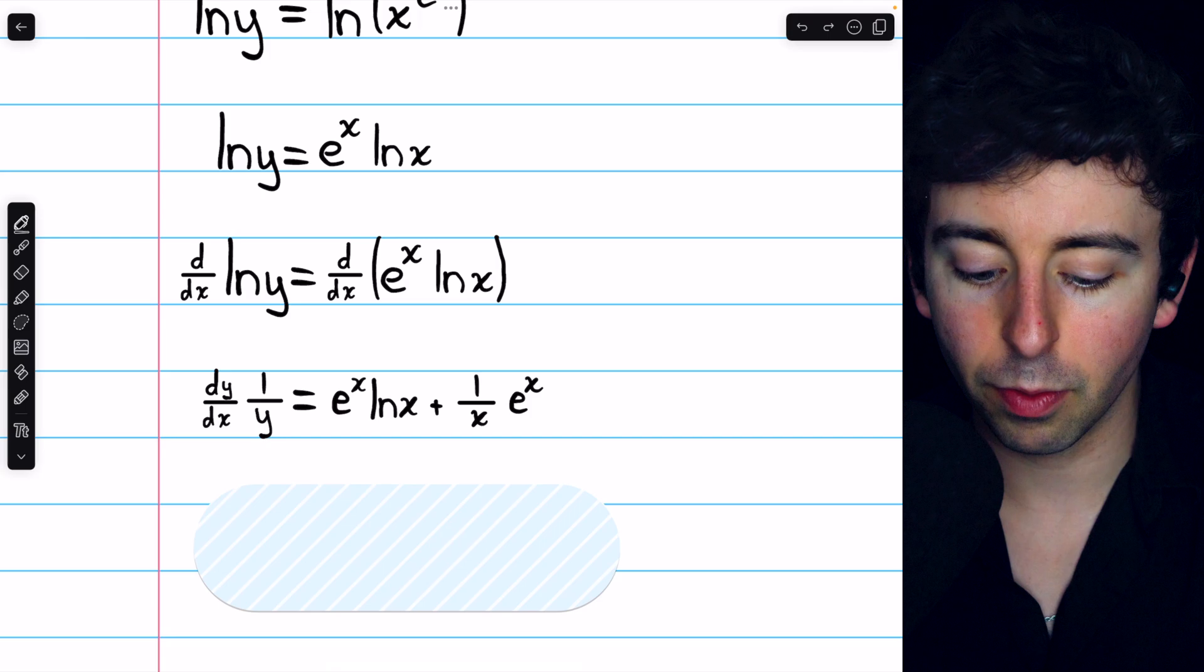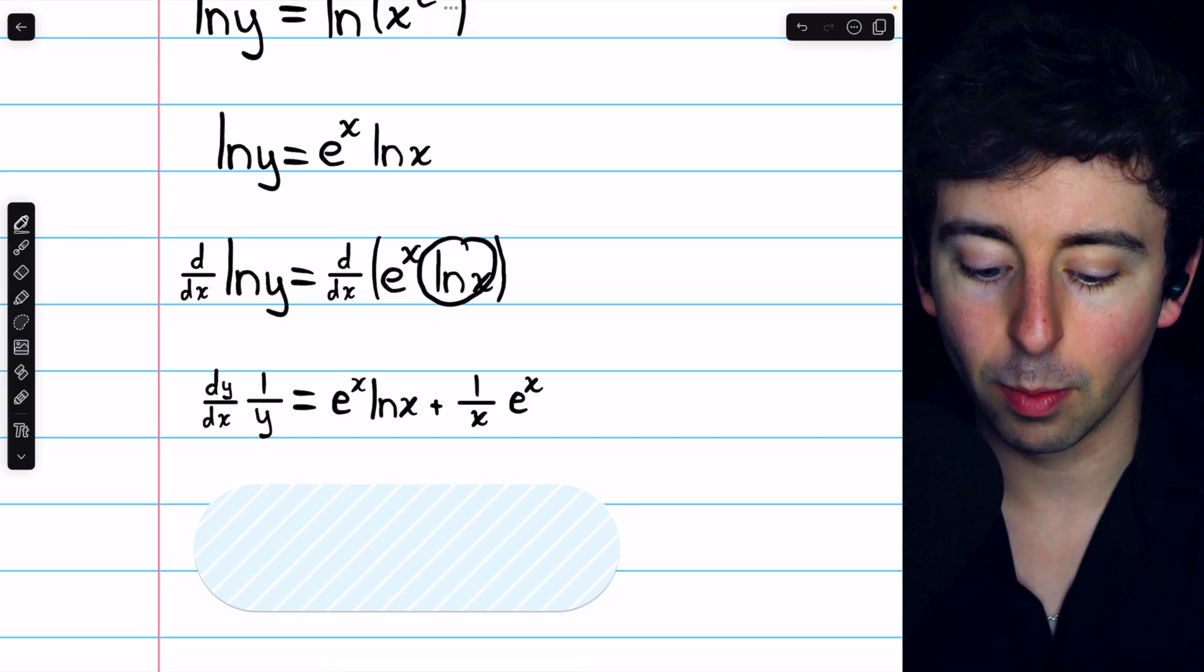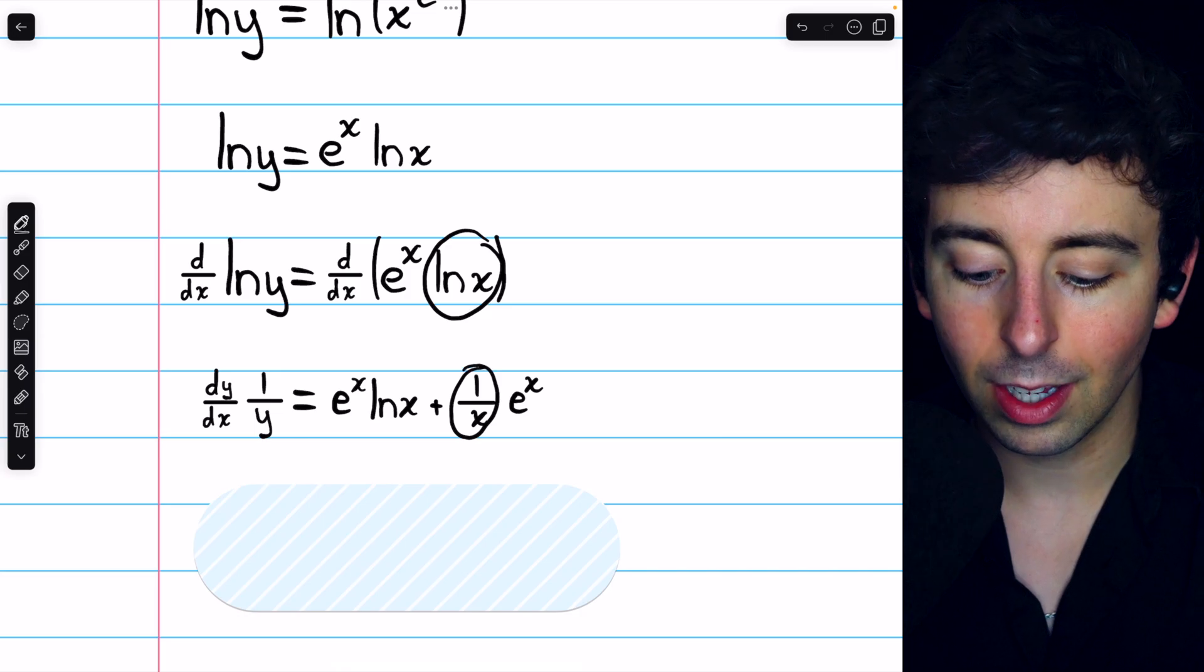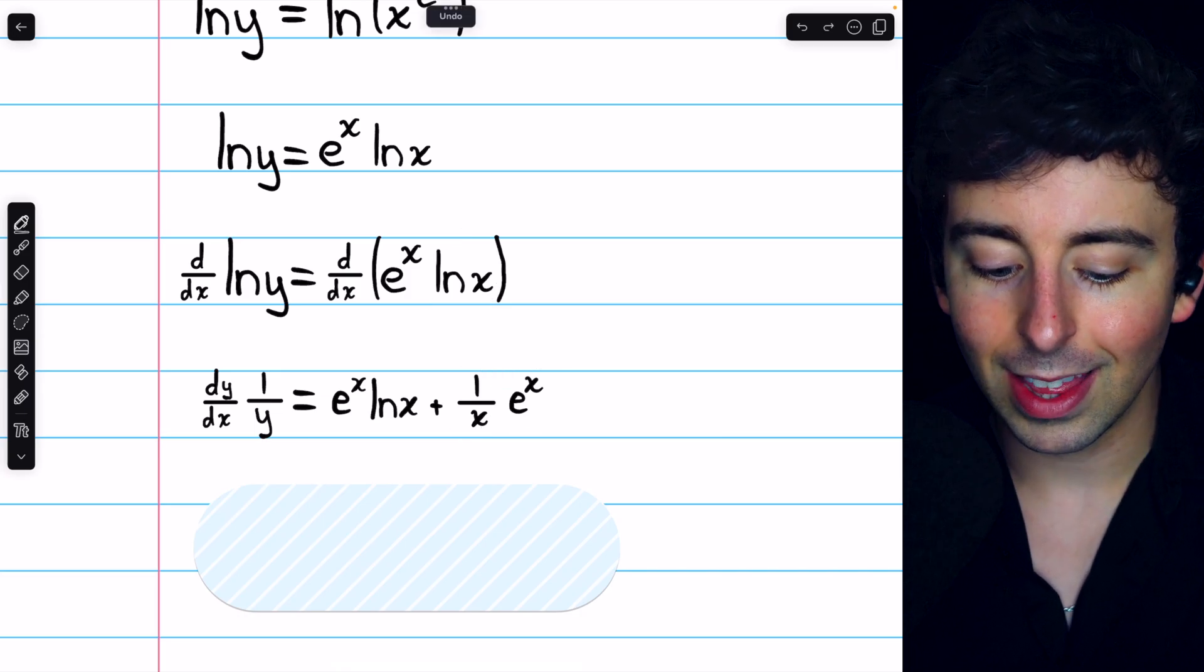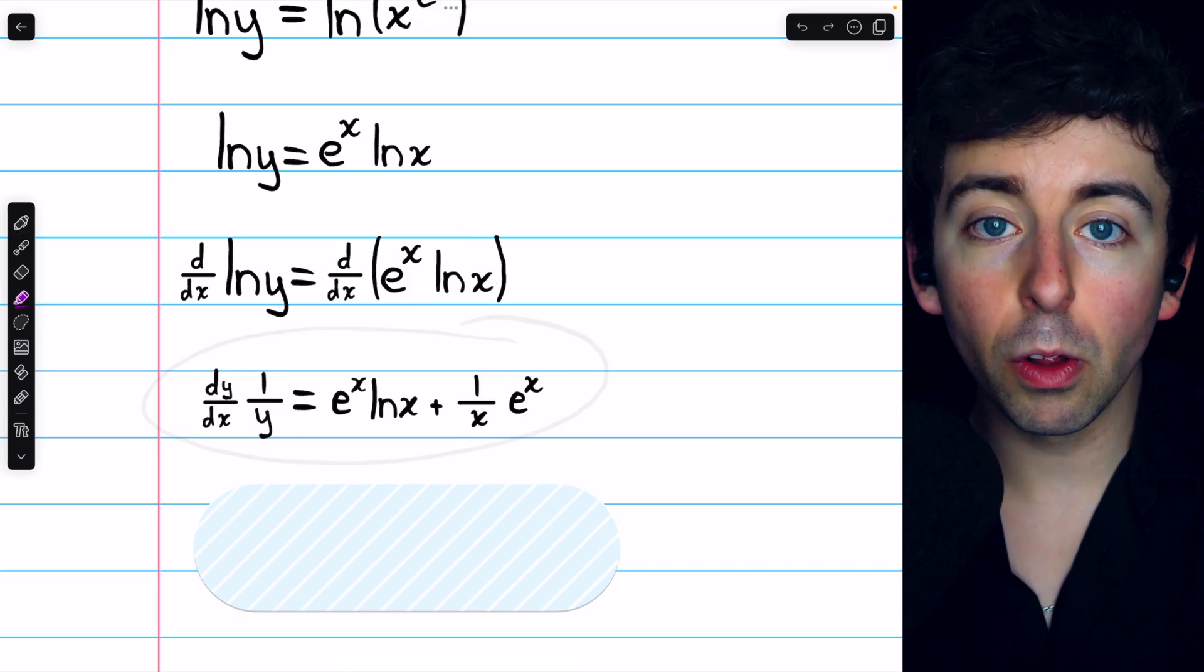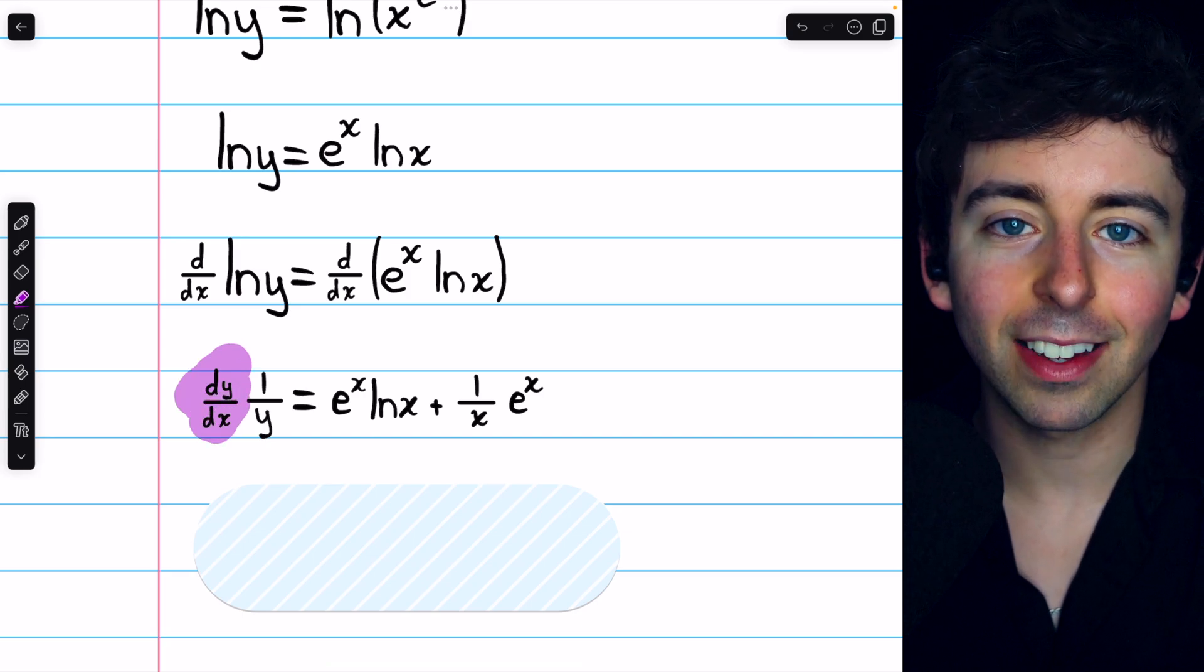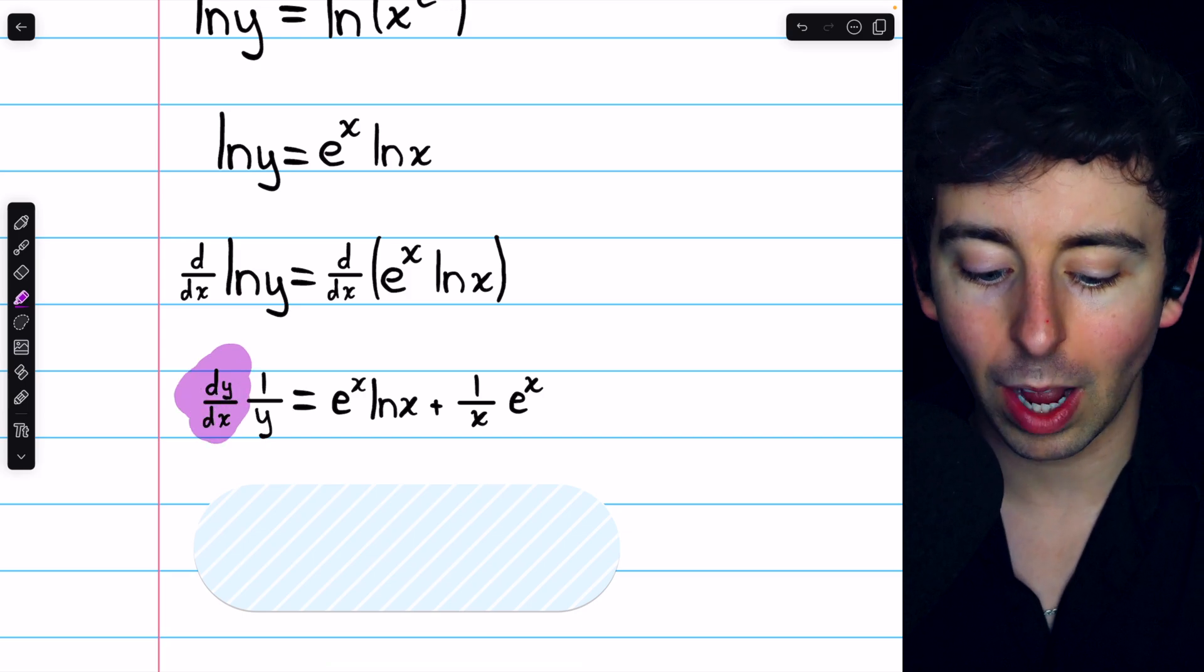So the derivative of the first function, which is e to the x times the second function, plus the derivative of the second function times the first function. That leaves us here. Now, the whole point is to find the derivative of our function, dy dx. So we just have to solve for dy dx.